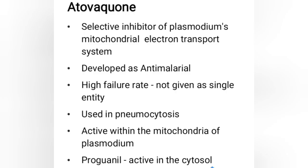Atovaquone is a selective inhibitor of Plasmodium's mitochondrial electron transport system. It was developed as an anti-malarial, but due to a high failure rate as a single agent, it is not given alone. It is used in treatment of pneumocystosis and is usually given in combination with proguanil. Atovaquone acts within the mitochondria of Plasmodium, while proguanil acts in the cytosol.